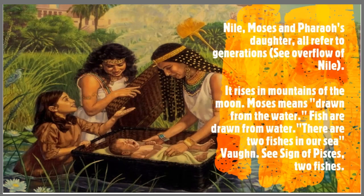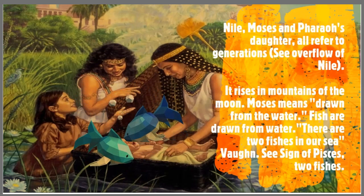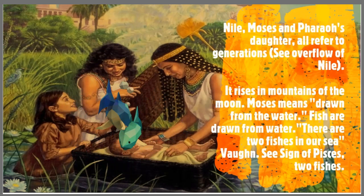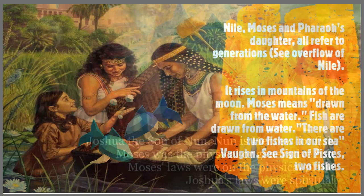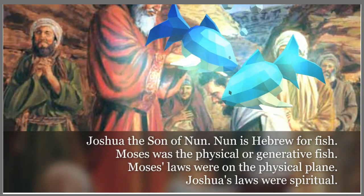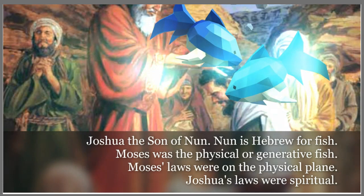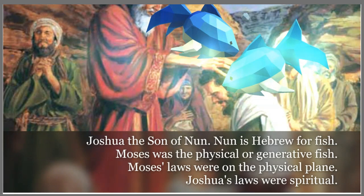See the overflow of the Nile — it rises in mountains of the moon. Moses means "drawn from the water." Fish are drawn from the water. There are two fishes in our sea — see the sign of Pisces, or the two fishes. Joshua, the son of Nun. Nun is Hebrew for fish. Moses was the physical or generative fish; Moses' laws were on the physical plane. But Joshua's laws were on the spiritual plane.